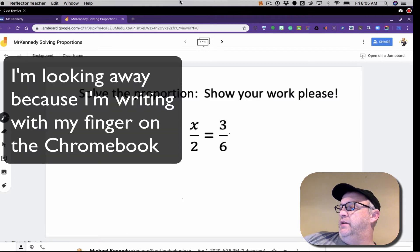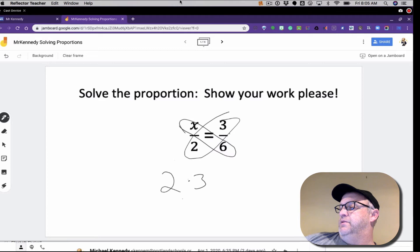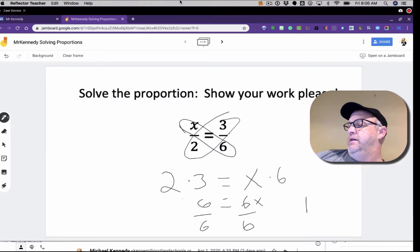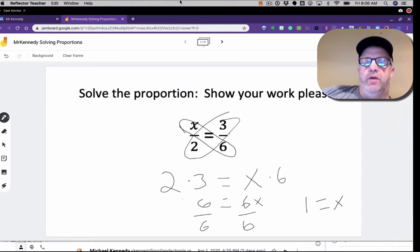We'll click outside and look at this first problem: solve the proportion. If you remember, you set your proportion equal to each other, so now we have 2 times 3 equals x times 6, which equals 6 equals 6x. We divide by 6 on both sides, and our answer is 1 equals x. Problem done.